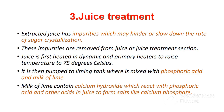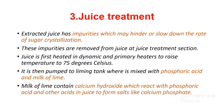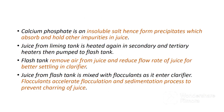The juice is then pumped to the liming tank where it is mixed with phosphoric acid and milk of lime. Milk of lime contains calcium hydroxide, which reacts with phosphoric acid and other acids in the juice to form calcium phosphate. Calcium hydroxide also raises the pH of extracted juice from 5 to around 8.4.